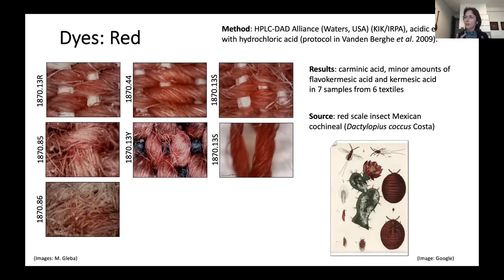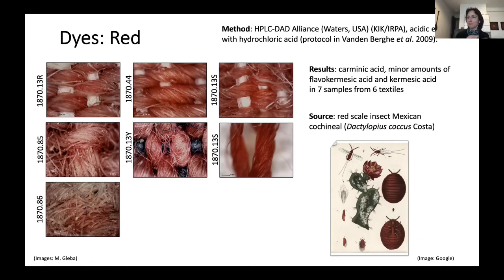So we now have a really complicated network that we can see when we analyze the textiles. The dyes are coming from America; some of the threads might have been produced from sheep, spun, and possibly woven in Europe, or maybe in India or Asia — and yet they all end up in African textiles. When we talk about globalization today, this was already happening in the late 18th century, and all of these networks were already existent.